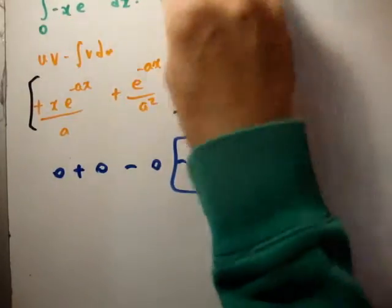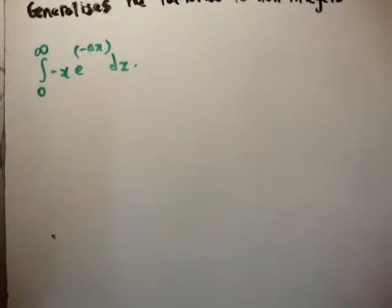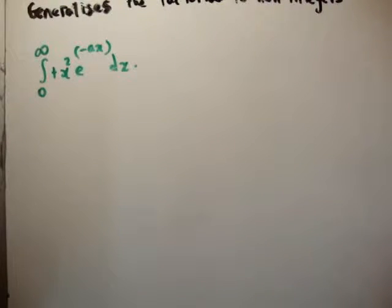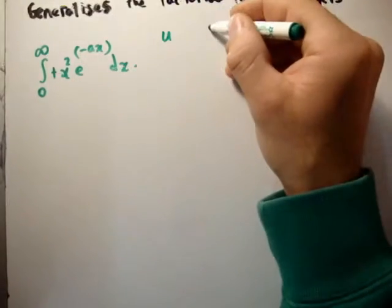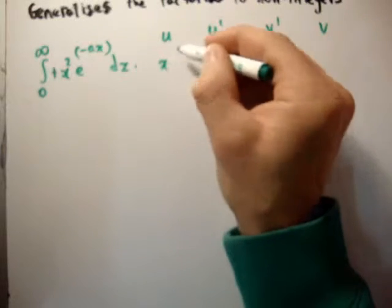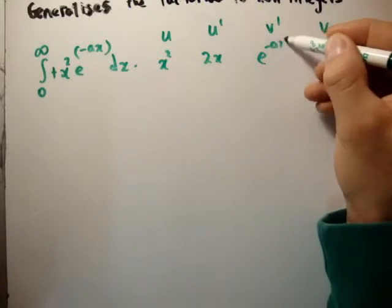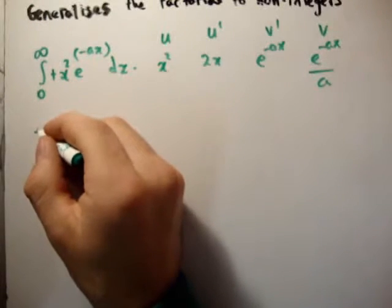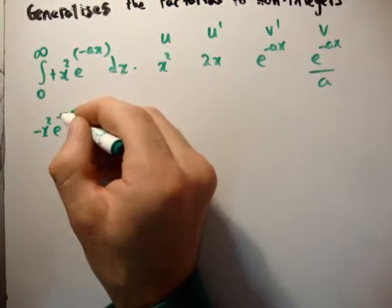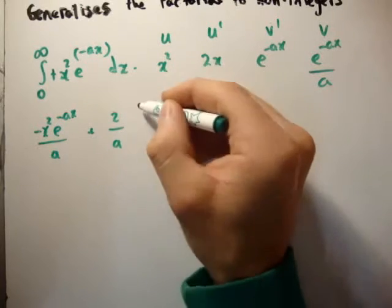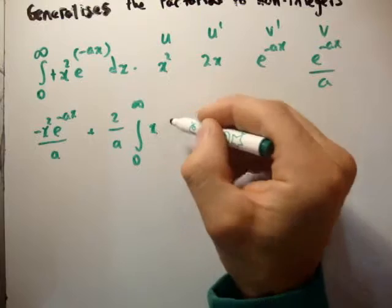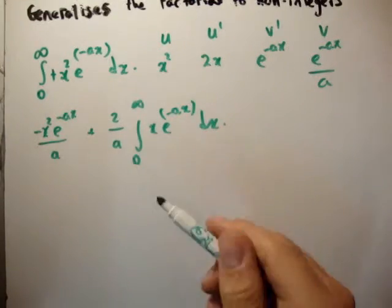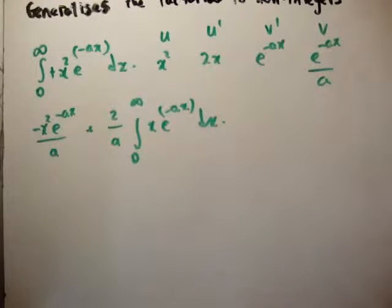Let's look at the next integral. This was the integral of x squared times e to the minus ax. Setting up integration by parts: u is x squared, u prime is 2x, v prime is e to the minus ax, v is e to the minus ax over minus a. Applying the formula gives minus x squared e to the minus ax over a, plus 2 over a times the integral from 0 to infinity of x times e to the minus ax dx. Note that this inner integral is the one we just did — so we're already seeing a recursion, or a factorial pattern emerging.